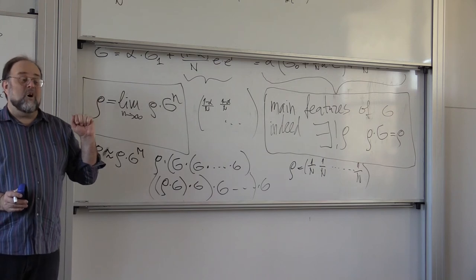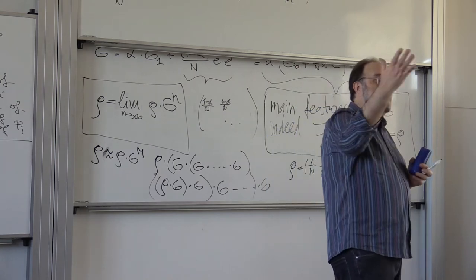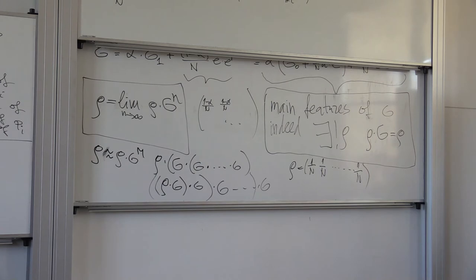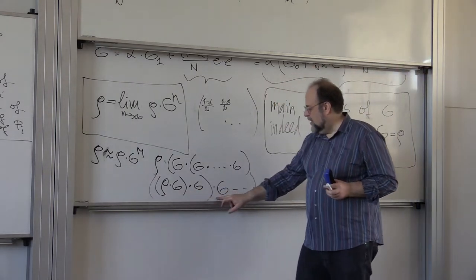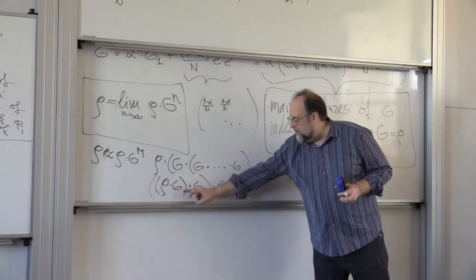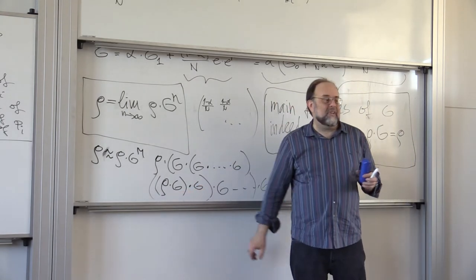So, if the probability to do the random jump is 15%, which means probability to do the link following is 85%, then it takes between 50 to 100 iterations to compute this value. So you will have between 50 to 100 multiplications of a vector times matrix.